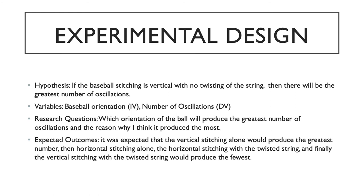My hypothesis for this experiment was if the baseball stitching is vertical with no twisting of the string then there will be the greatest number of oscillations. My independent variable was baseball orientation and my dependent variable was the number of oscillations completed. The research question I was looking at was which orientation of the ball will produce the greatest number of oscillations and why does that orientation produce the greatest number.